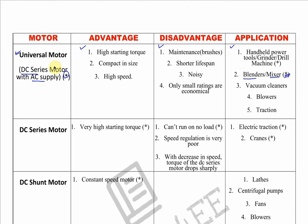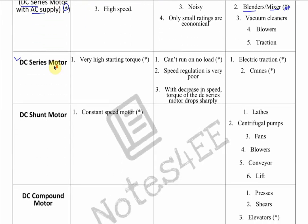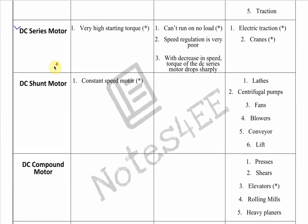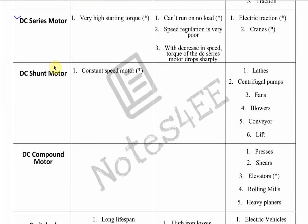The second motor type is DC Series, third is DC Shunt, and fourth is DC Compound. For the DC Compound motor, I have not separately covered advantages and disadvantages because the DC Compound motor is essentially a combination of DC Series and DC Shunt.